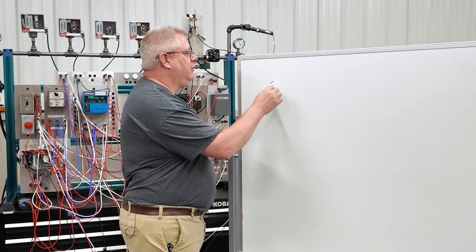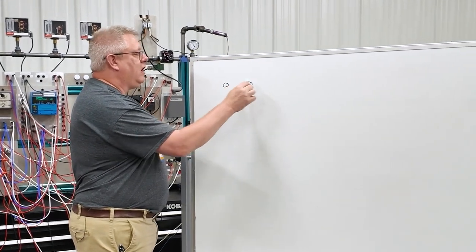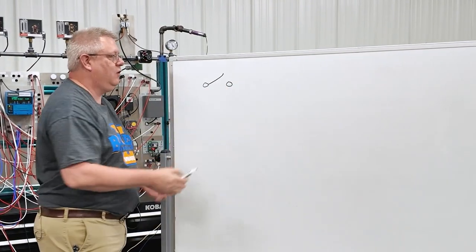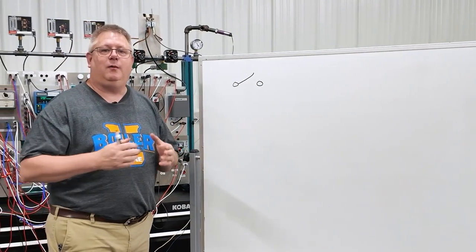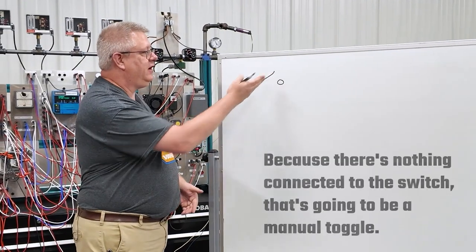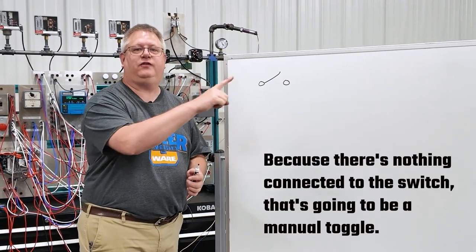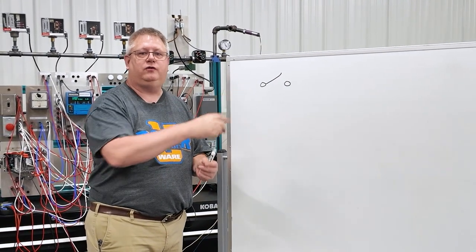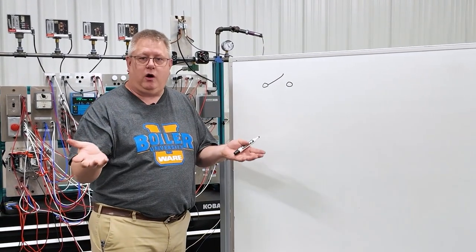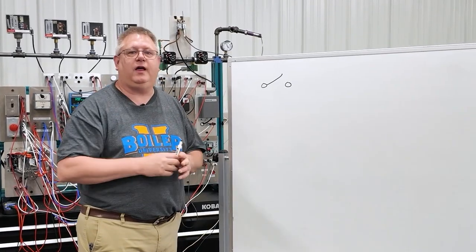The first is a simple switch. If we show contacts and we show a switch, essentially because there's nothing connected to the switch, that's going to be a manual toggle. So for instance, the burner on-off switch could be represented like that.